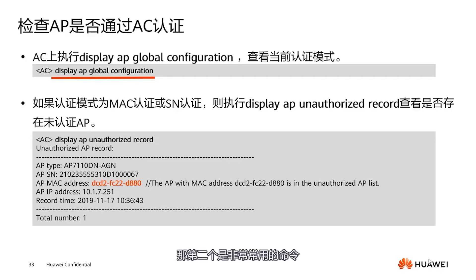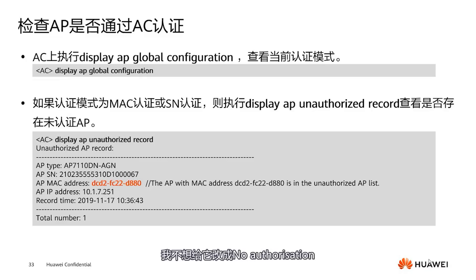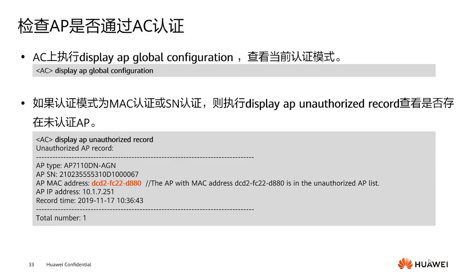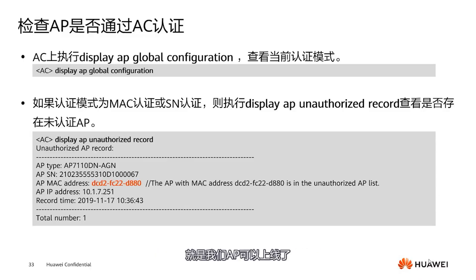Let's examine a case study. There's an AP, a switch, and the network spans across to the AC. First, check whether the AP and AC can ping each other — if they can, there shouldn't be major network issues. Second, use display AP all to check if the AP status is fault, indicating a configuration issue. Third, use display AP online fail record — if it shows 'configuration failed' or 'commit failed', there was an issue deploying the configuration.